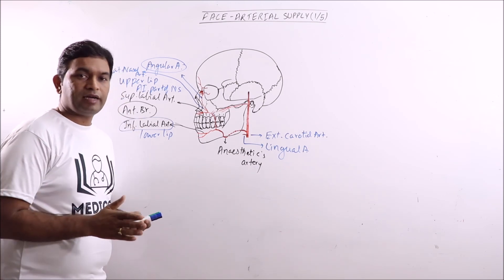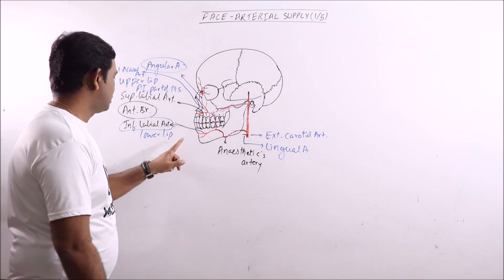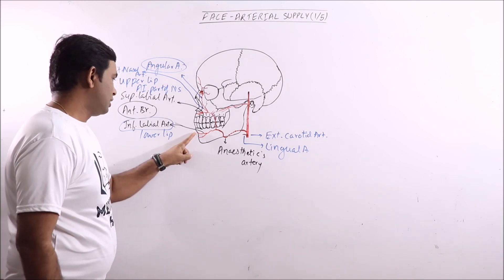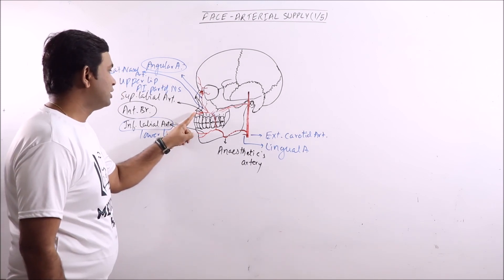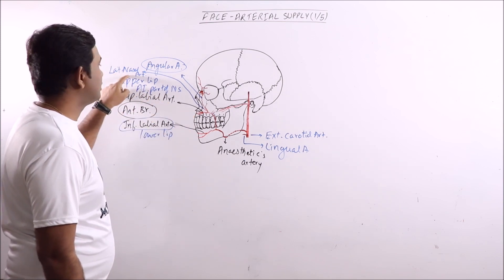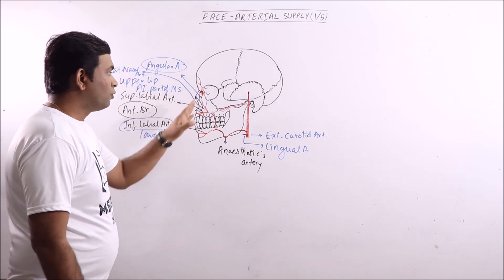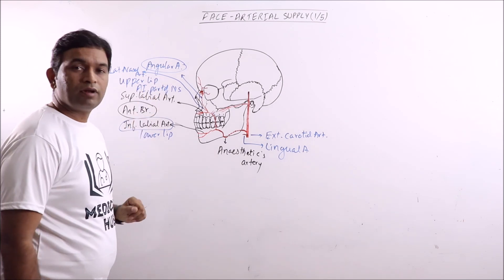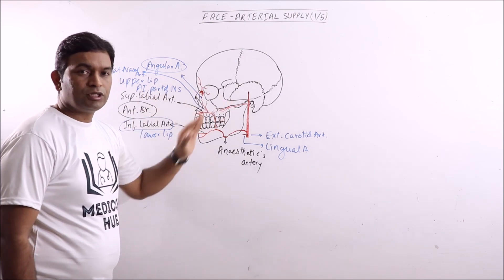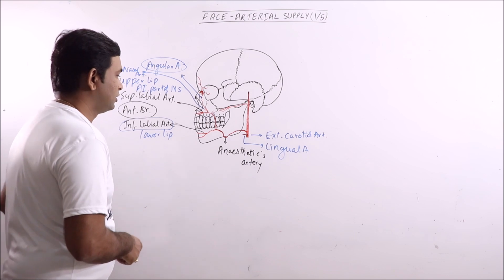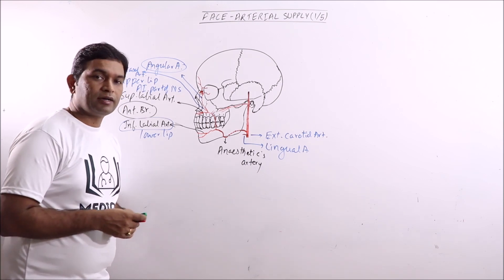So basically there are three anterior branches: inferior labial artery, superior labial artery, and the lateral nasal artery. One is the terminal branch, that is angular artery, and some posterior branches are also there which are small and unnamed. So these are the branches of facial artery.